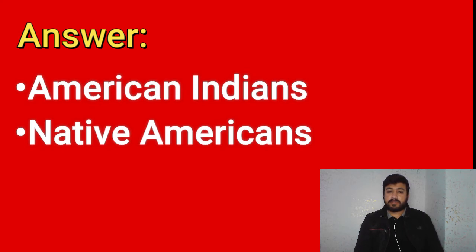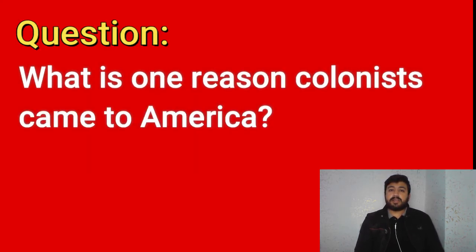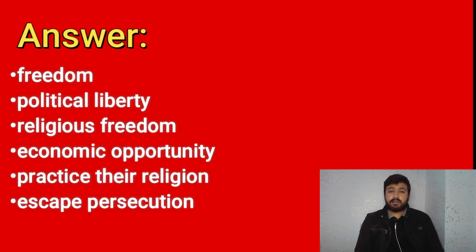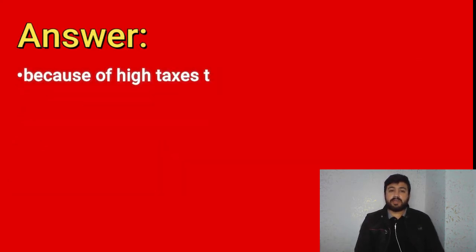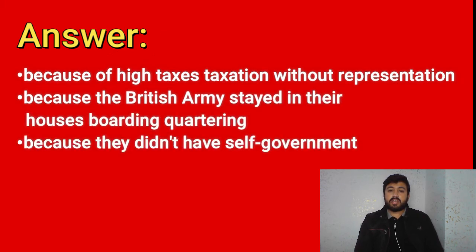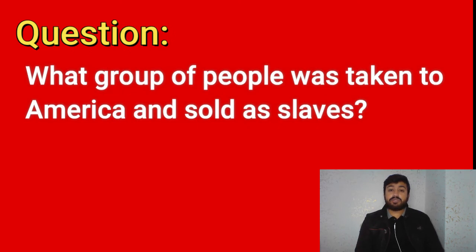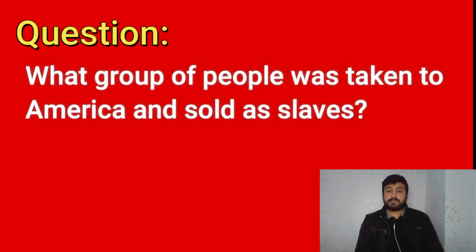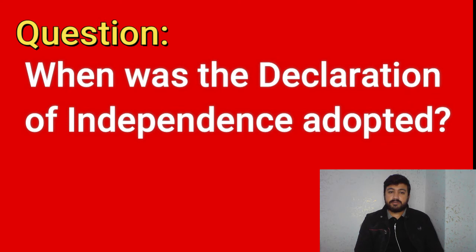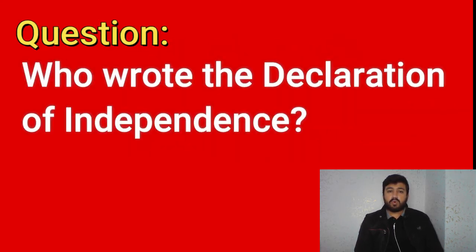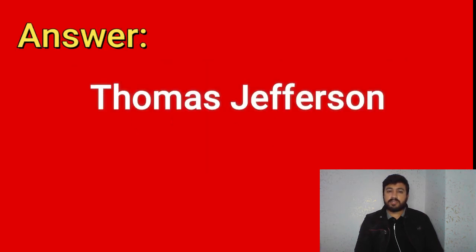Who lived in America before the Europeans arrived? American Indians, Native Americans. What is one reason colonists came to America? Freedom, political liberty, religious freedom, economic opportunity, to practice their religion, to escape persecution. Why did the colonists fight the British? Because of high taxes — taxation without representation — because the British army stayed in their houses, because they didn't have self-government. What group of people was taken to America and sold as slaves? Africans, people from Africa. When was the Declaration of Independence adopted? July 4, 1776. Who wrote the Declaration of Independence? Thomas Jefferson.